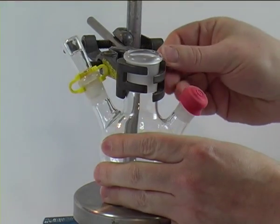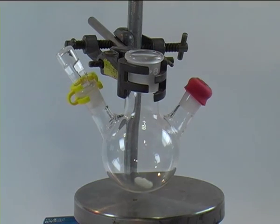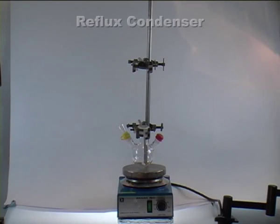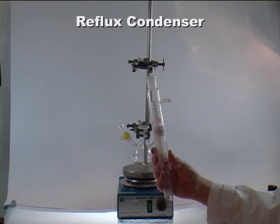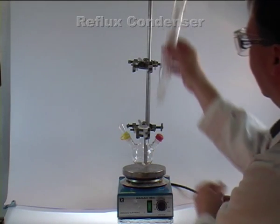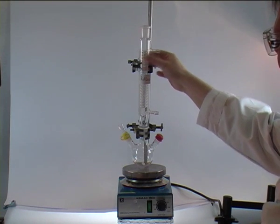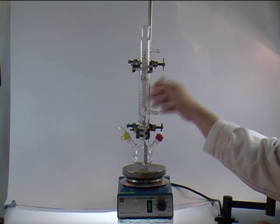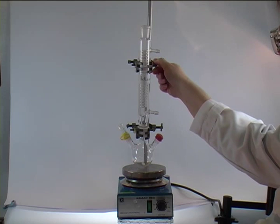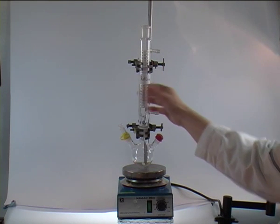Once that is done, we rotate the round bottom flask into position. The next piece of equipment is our reflux condenser, which can be put on easily if the whole arrangement was aligned vertically. And what remains is just to tighten the clamp so it sits securely.